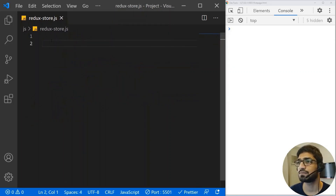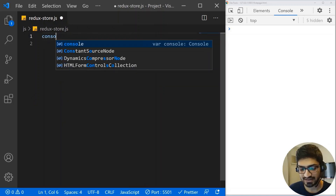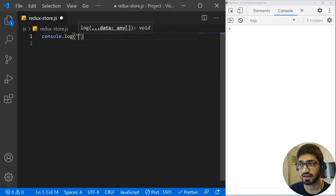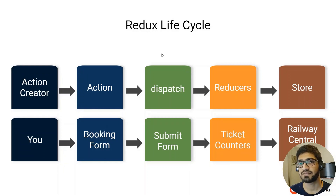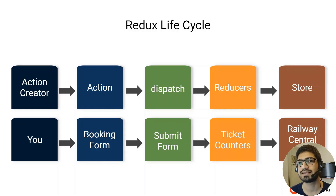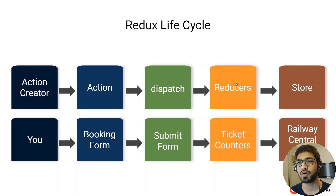So we don't need this HTML file, I'll just remove this. This is the Redux store.js, and if I do a console.log and type 'hi', we should be able to see the output here. Let's go one step back and recall what we studied in our last video — the concept of Redux. We have an action creator who creates an action, then it dispatches the action to the reducer, and then the reducer has the power to update the state.